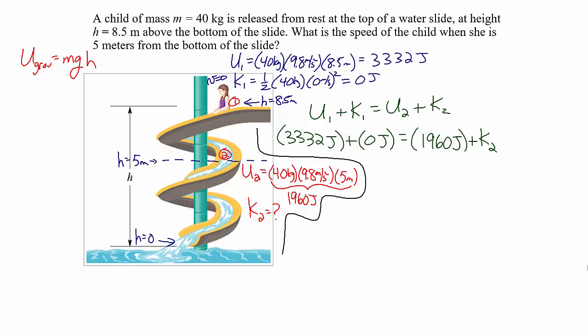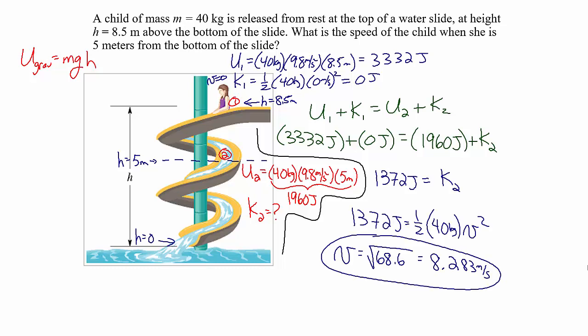The initial mechanical energy of 3,332 joules must equal the potential energy at point 2 of 1,960 joules plus the kinetic energy at point 2. This gives a kinetic energy at point 2 of 1,372 joules. Using KE = ½mv², the speed is 8.283 meters per second. By knowing the total mechanical energy at one location, we know the total at any other location, so if we know how much is potential we know how much is kinetic, and vice versa.